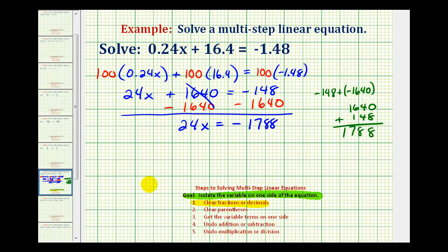And then for the last step, since twenty-four x means twenty-four times x, we'll divide both sides by twenty-four. Twenty-four divided by twenty-four is equal to one, so here we have x. Now we need to determine this quotient.